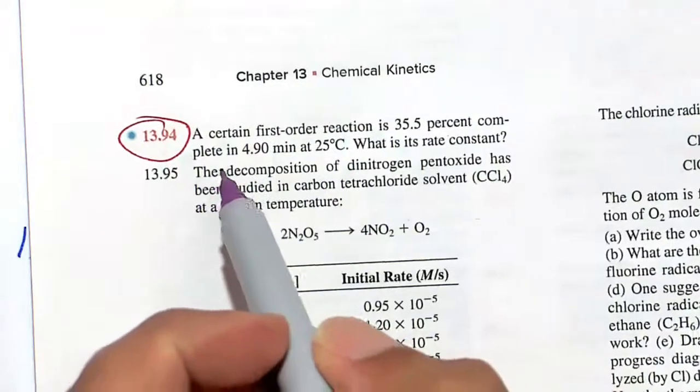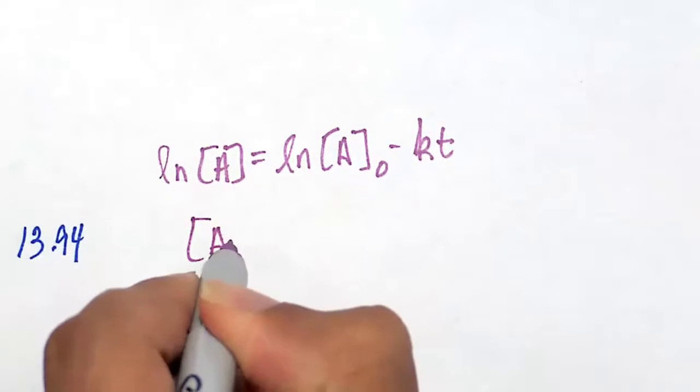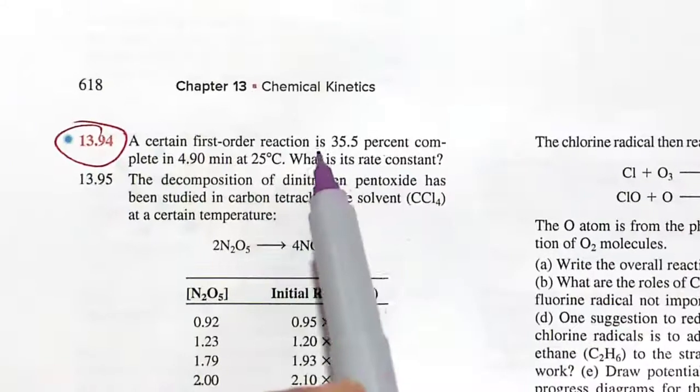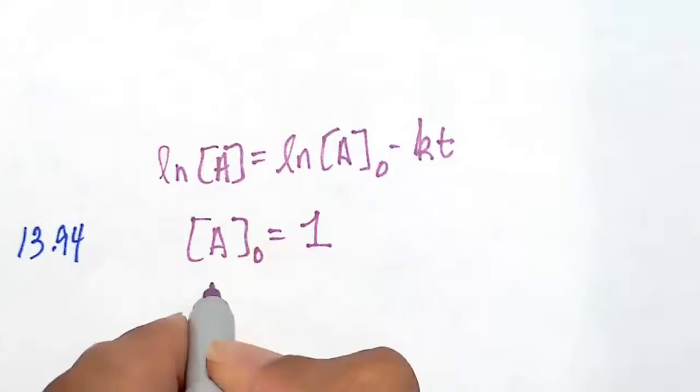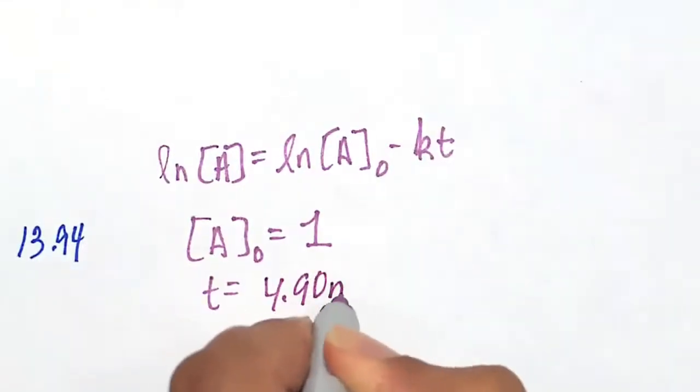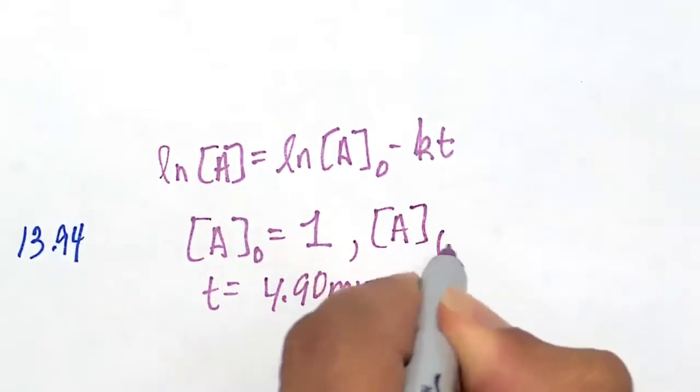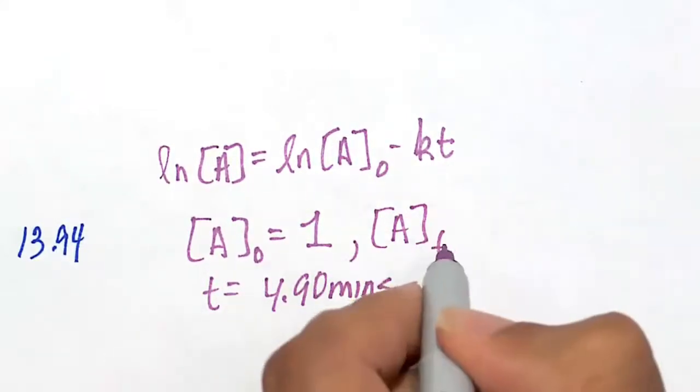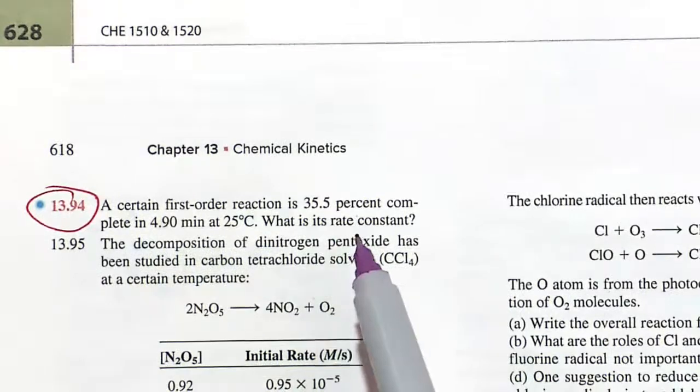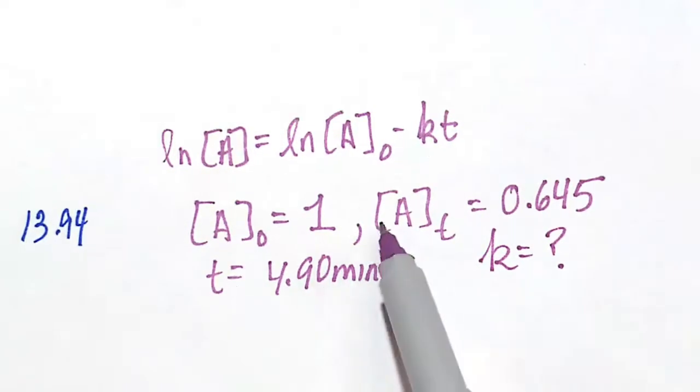And so you've got to think of this carefully here. 35.5% complete. So 100%, let's say you started out with 100%, we'll call that 1. 35.5% complete means at some time T, which actually they tell us at time T, which is 4.90 minutes. The reaction is 35.5% complete. So that would mean that A sub T, at some time T, actually 4.90 minutes of T, we have, what's 1 minus 0.355? It's going to be 0.645. So this is the inventory of what we have, 35.5% complete. So that would mean 0.645 is left after 4.90 minutes.